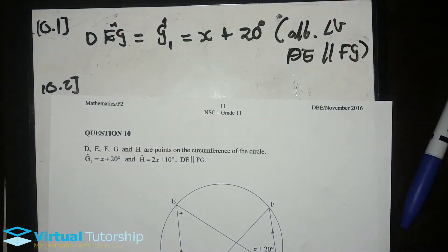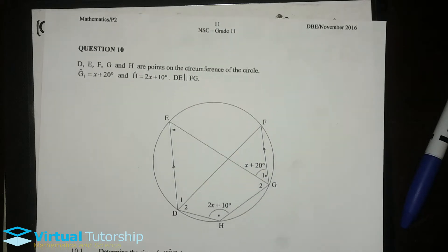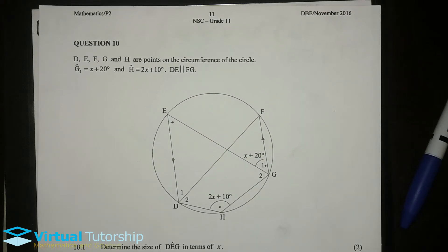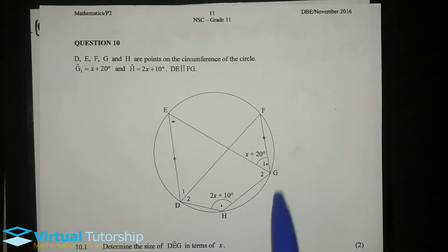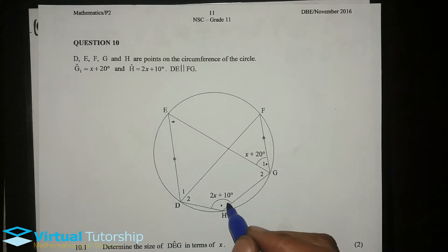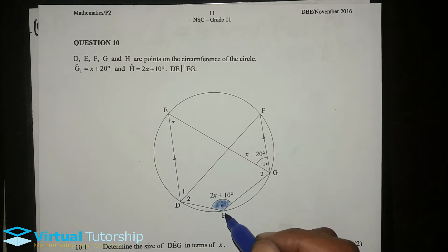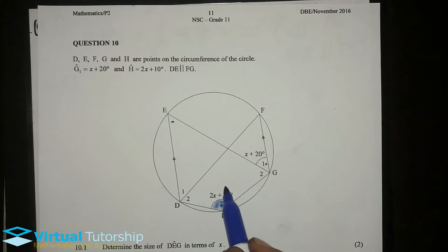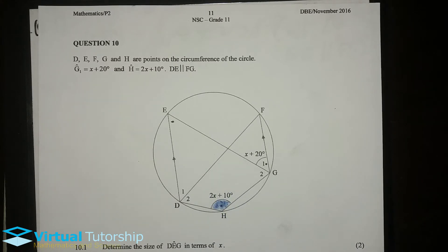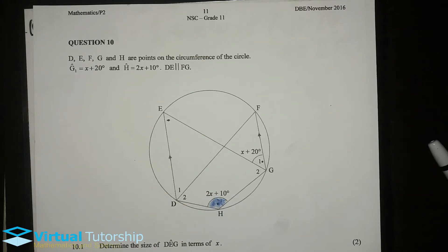10.2. So, now I am going to find the size of DHG. Interesting. If I am going to find this angle DHG, I am going to express it in terms of X. Already, I know this angle. But I am going to show you how to find the actual size, in degrees without the X. Now, this is simple.